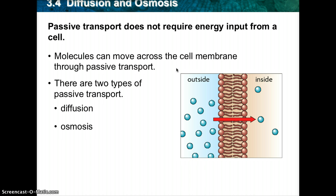Osmosis is the diffusion of water through a selectively permeable membrane. Selectively permeable means it chooses what molecules go through. People always think, 'Oh, if I put my textbook under my pillow, I'm going to learn my biology through osmosis.' Obviously that is wrong, because osmosis is specifically the diffusion of water.